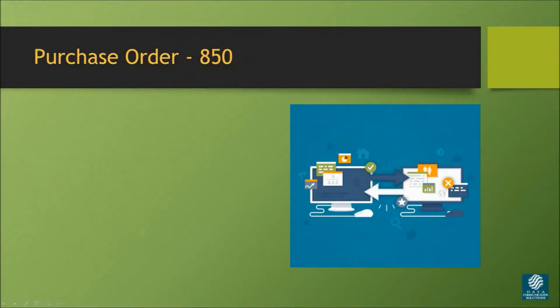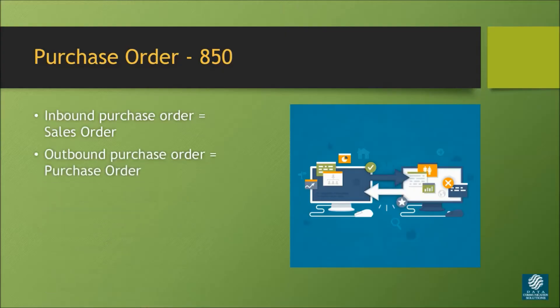From the perspective of a company's ERP system, an inbound purchase order is called a sales order. In contrast, a purchase order going out from the ERP system is called a purchase order, or PO for short. In this video, we'll look at the process from the perspectives of both the seller and the buyer to get a good understanding of the customer order process flow.